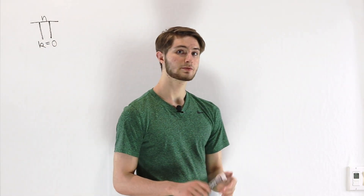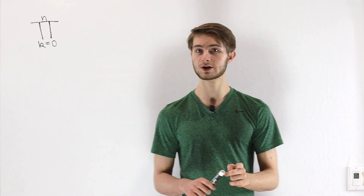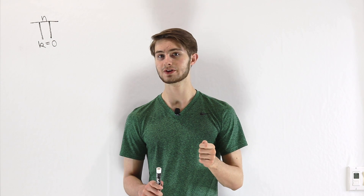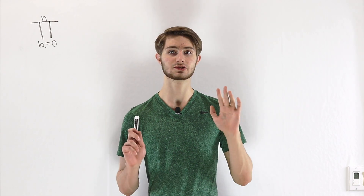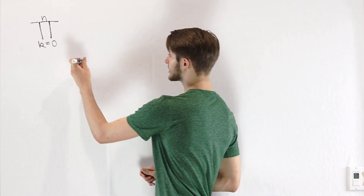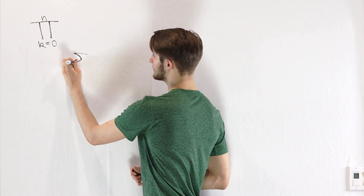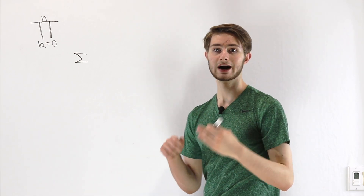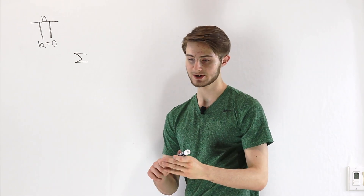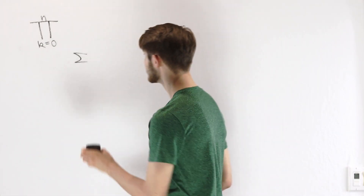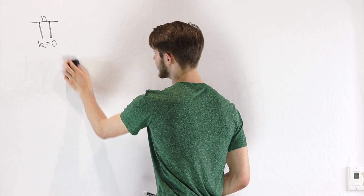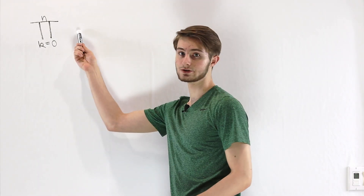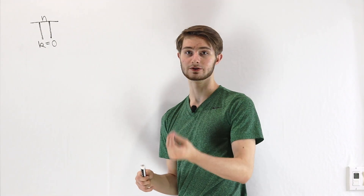We are going to talk about how to write 1 over 1 minus x as an infinite product. In order to do that, we have to start with sum notation. When we talked about sums, we would use sigma notation to say that we're adding up a particular number of things. When we translate that from sums into products, we use pi notation — pi for product.